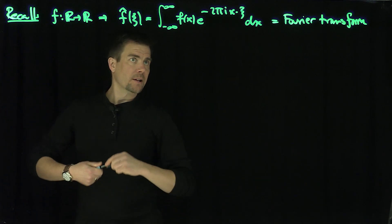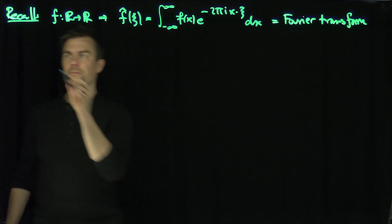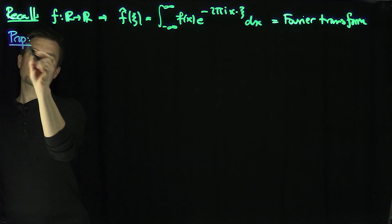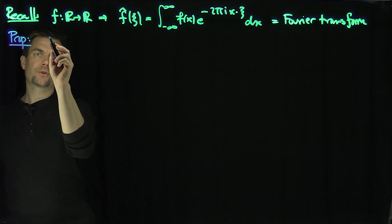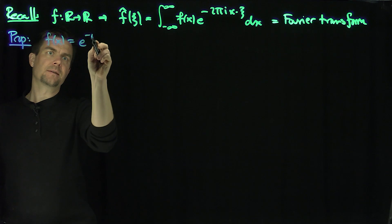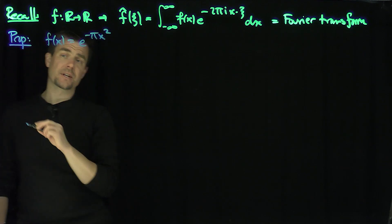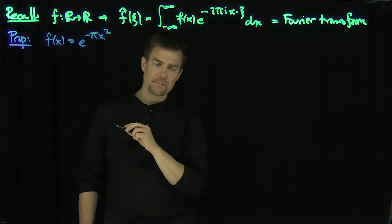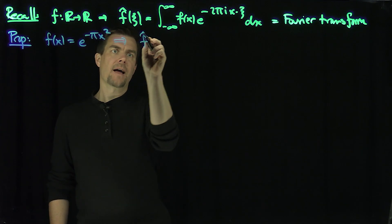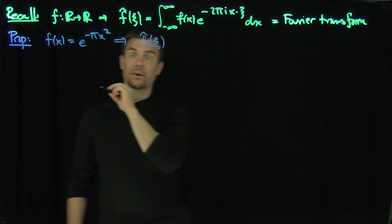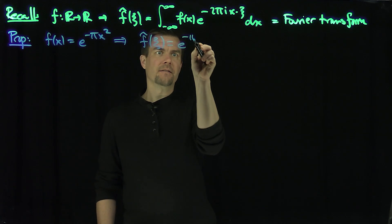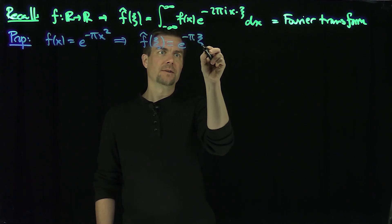What I'd like to do now is show the following proposition: if f(x) = e^{-πx²} — just a Gaussian function — then f̂(ξ), the Fourier transform of this function, has exactly the same form, which is beautiful: f̂(ξ) = e^{-πξ²}.